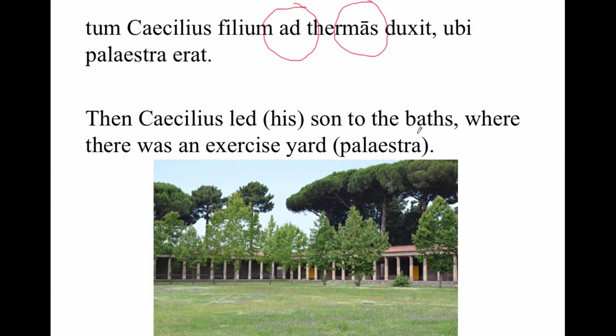I'm going to be translating this for the rest of the story as just 'where there was a palaestra.' What the palaestra was — it was an open area. This is the palaestra in Pompeii. It's just a wide open field where people would wrestle, they might box, and this is where we're going to actually practice throwing this discus.